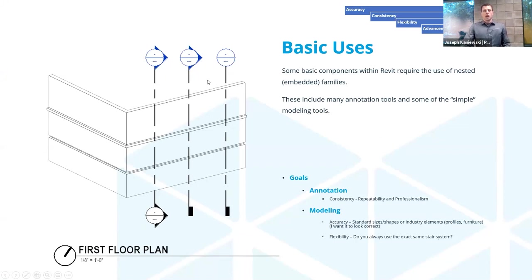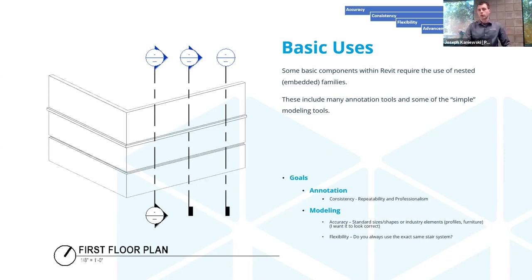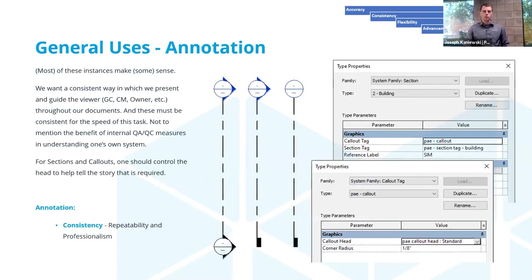Starting with annotations: the basic use is that we have elements that must have something within them. These are just built upon themselves — and it's the consistency side, the branding. If your company has standardized on a particular callout from the hand-drafting days, converted to CAD, then to Revit, that's how you maintain it. It's in the template, in the library, all set and ready to go.